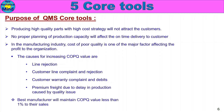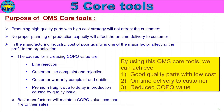The best manufacturers maintain a cost of poor quality value of less than 1% of their sales. By using QMS core tools, we can achieve good quality parts with low cost, on-time delivery to the customer, and a reduced cost of poor quality value.